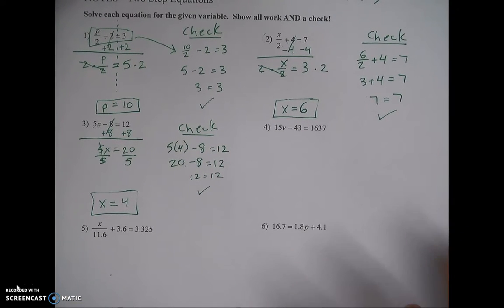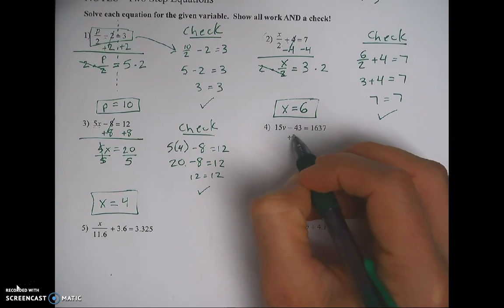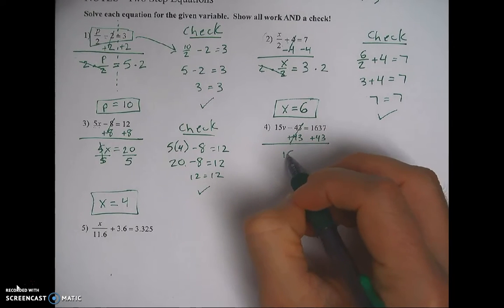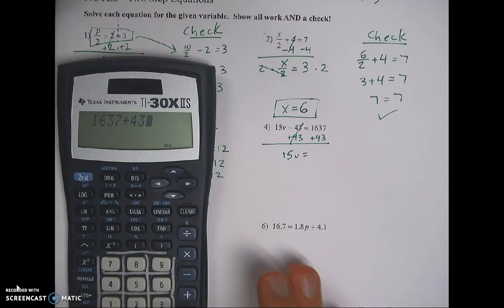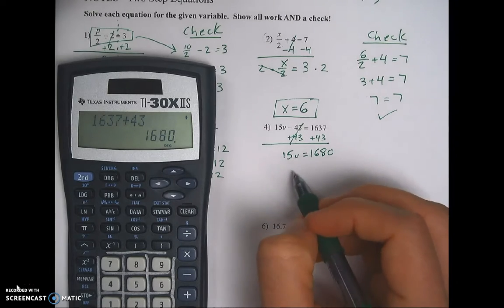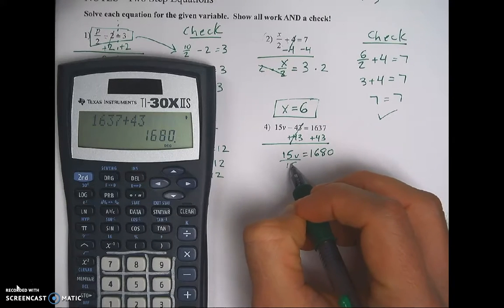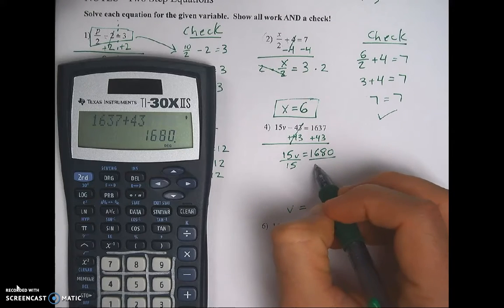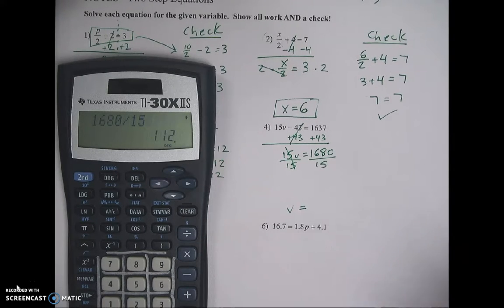Number 4. Same idea. So I see v on the left side. There's a 15 and a 43. I'm going to start with the 43. That's the lonely number. It's being added or subtracted. Since it's a minus, I'm going to add 43. It's going to cancel. Leaving me 15v on the left side equals. I'm going to grab my calculator now. 1637 plus 43. And we get 1680. Okay. I still don't have v by itself. That's my final goal. V equals something. So right now I see multiplication. I'm going to divide. 15 times something gives me this. So to think backwards, I'm dividing. 15s cancel. So 1680 divided by 15 is 112.